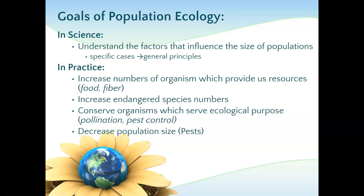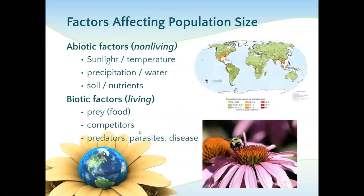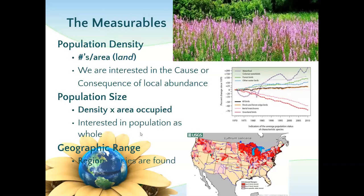Those that are endangered, we want to try to bring back those numbers — we need to understand what is bringing the numbers down and how we can bring them up. We have a need to keep organisms that serve a purpose in the ecosystem itself: pollinators, those that are pest controls. Sometimes we have pests that are overpopulated and we want to decrease their numbers. We have to understand population ecology in order to tackle any of these goals.